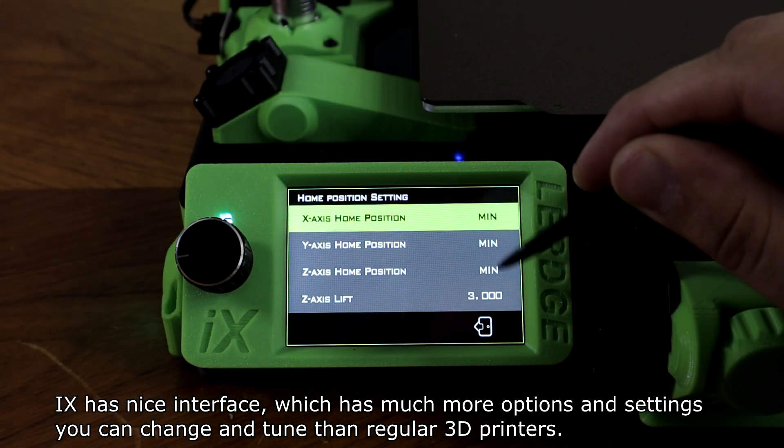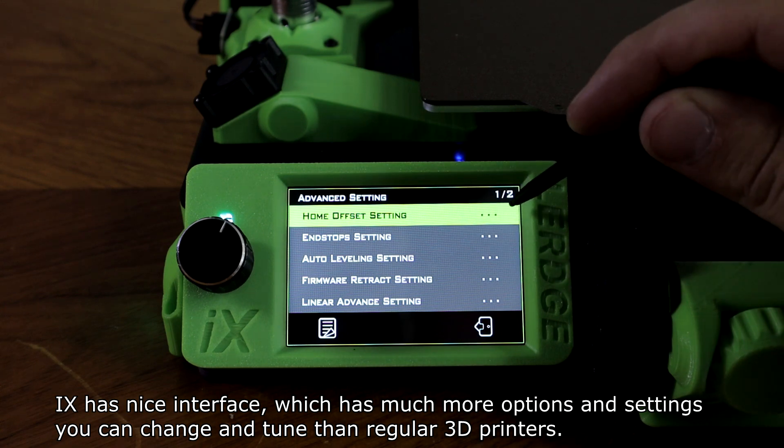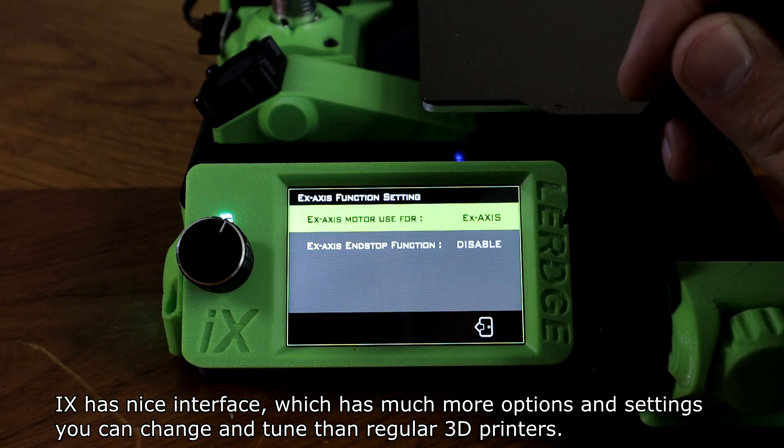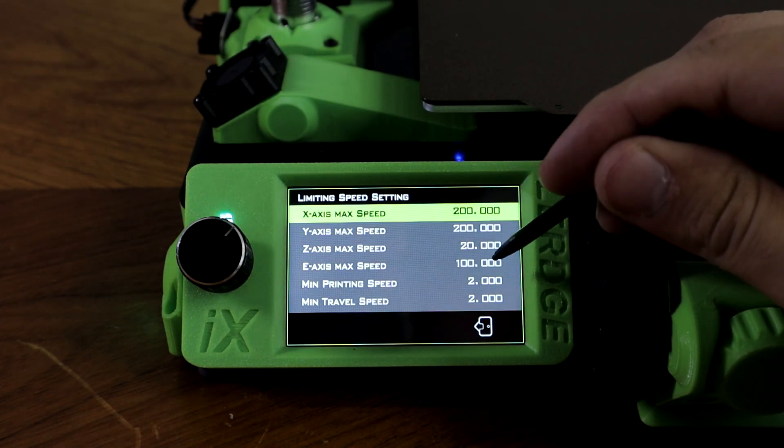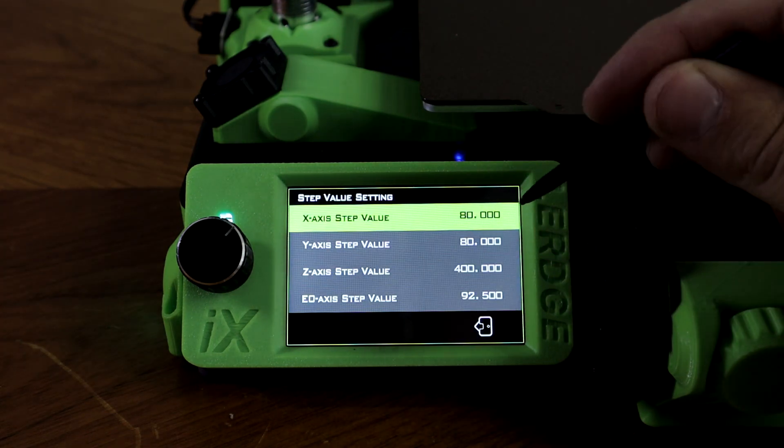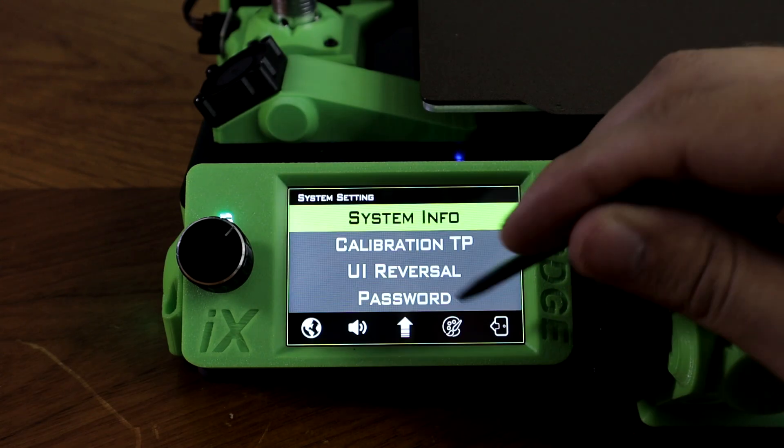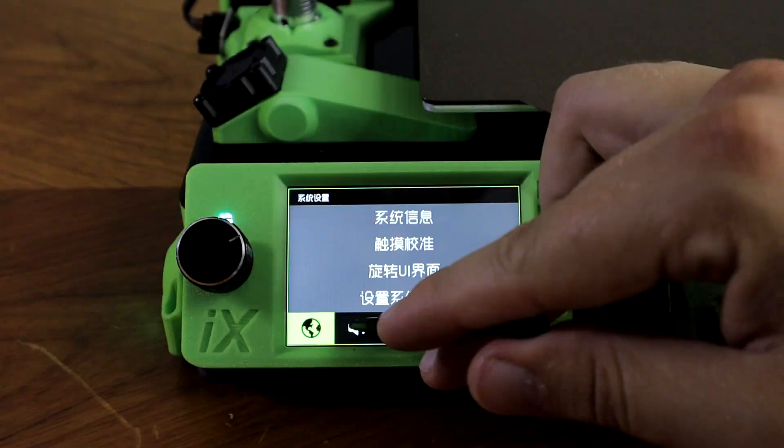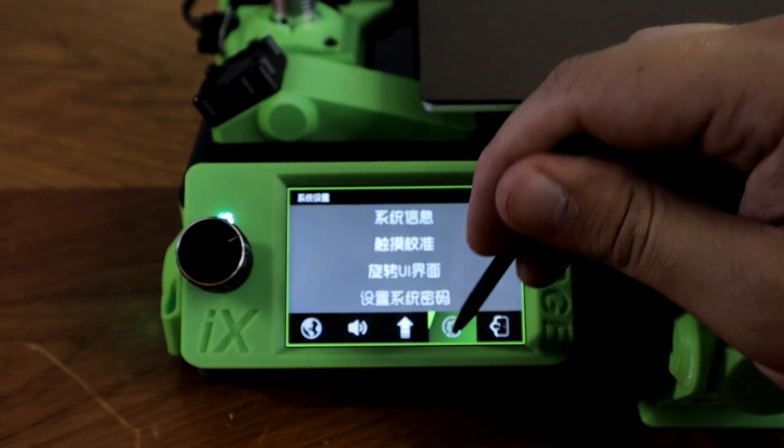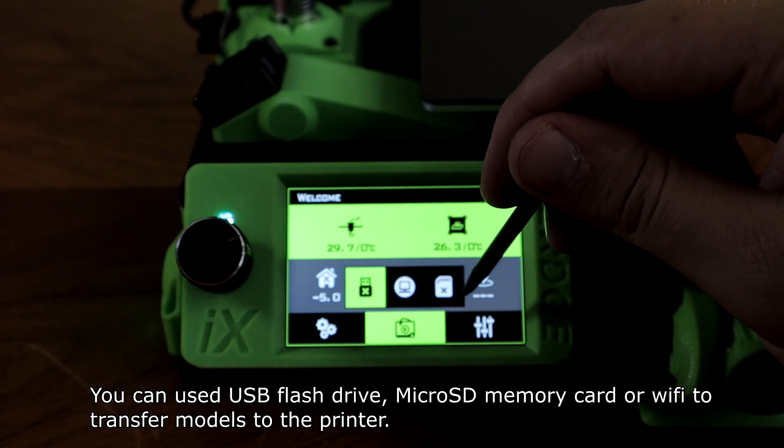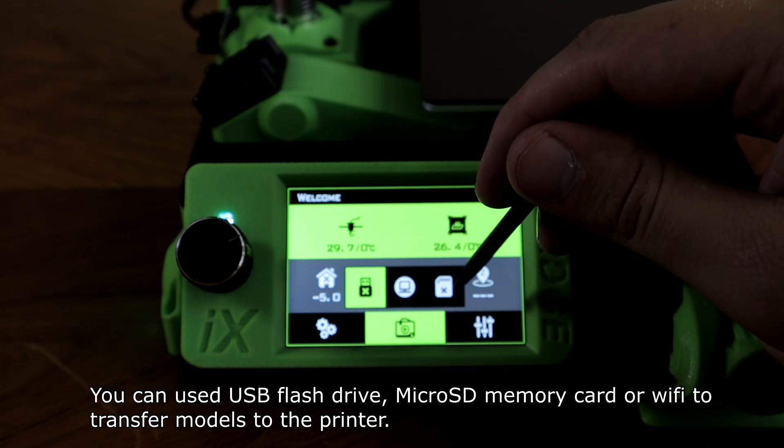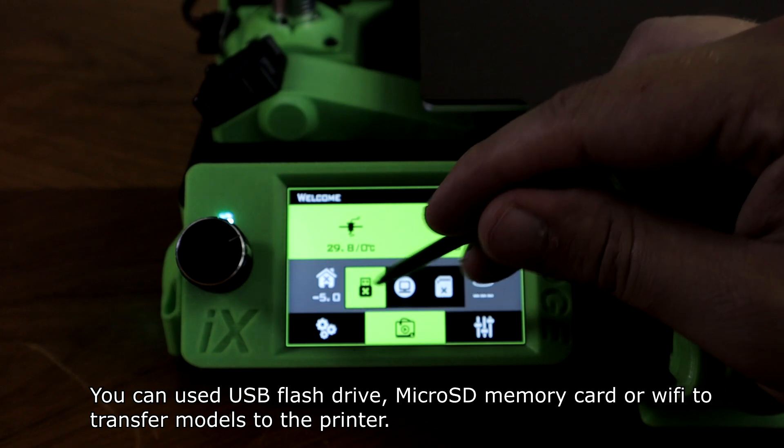iX has a nice interface, which has much more options and settings you can change and tune than regular 3D printers. You can use USB flash drive, microSD memory card or WiFi to transfer models to the printer.